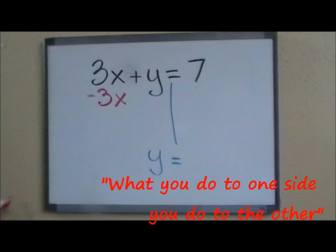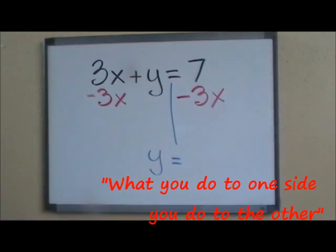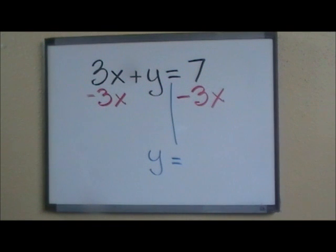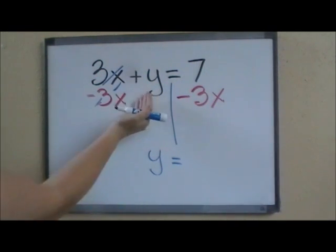And remember our rule: what I do to one side, I do to the other. So on the left side, the 3x's are going to cancel, and all that I'm going to have left is the y.